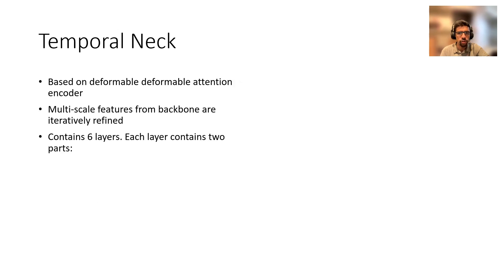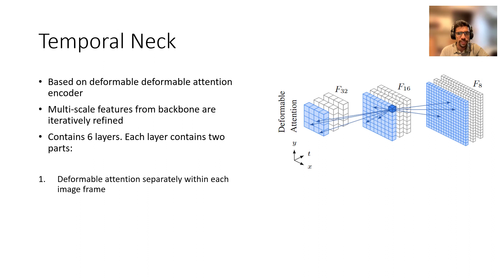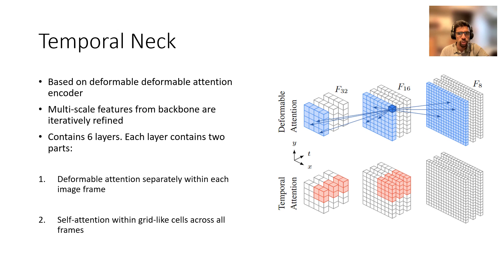Our implementation for this is based on the deformable attention encoder, which is quite popular in image level methods. It works by iteratively refining the multi-scale features from the backbone over multiple layers. Each layer is composed of two parts. The first is a deformable attention operation within each image frame.